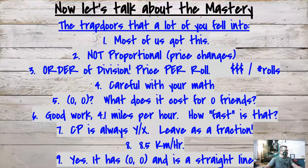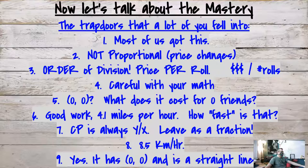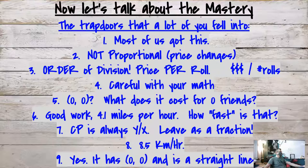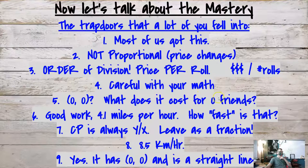I'm going to go problem by problem - stick with me. Problems one and two: most of us got those. Number one was a proportional relationship; number two is not proportional because the cost per roll changes. Number three got almost all of us - what you did wrong was the order of your division. If you get 1.2, that answer is rolls per dollar, which is not what I asked for. 'Dollars per roll' means divide the dollar amount by the number of rolls.